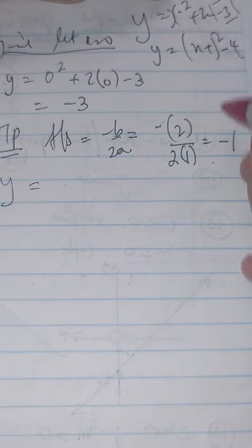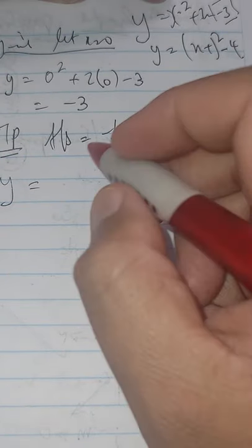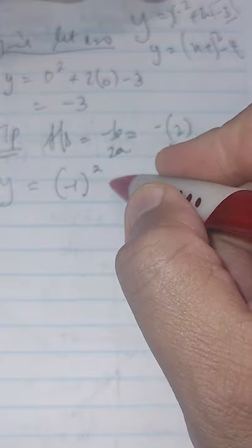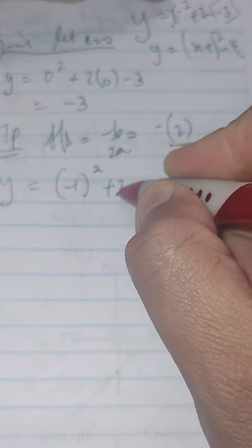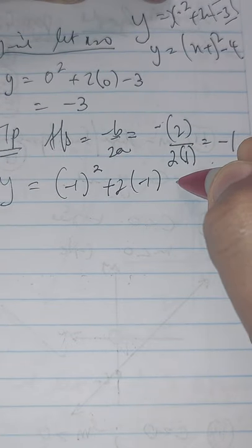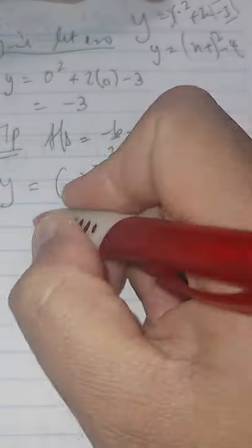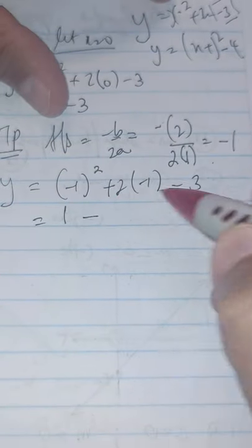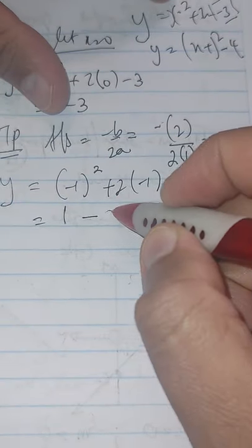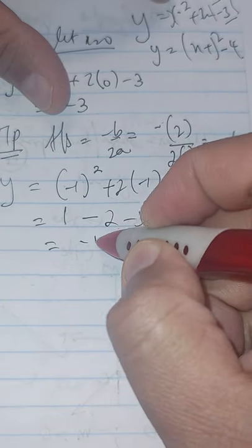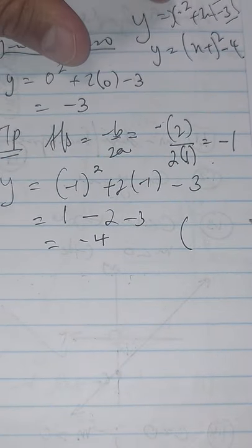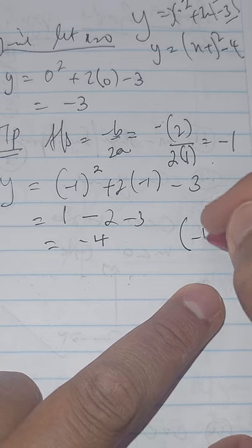So y equals, now I substitute negative 1 in one of the two equations, so it's going to be negative 1 squared plus 2 times negative 1 minus 3. It's going to give you 1, move this in the calculator, we'll get negative 4. So the turning point is negative 1 and negative 4.